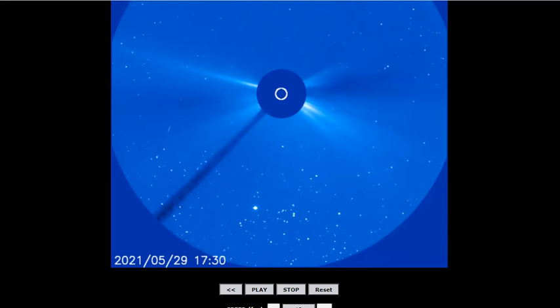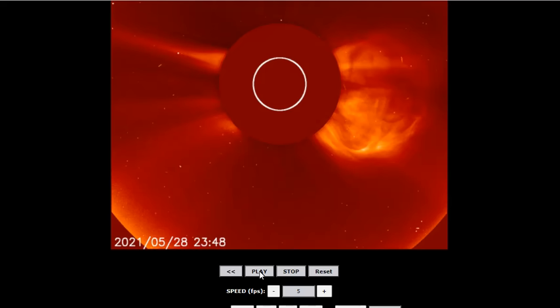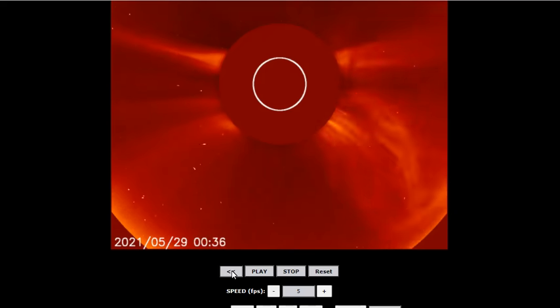And you can see that blast moving out. So that's one of the reasons why we think that there may be a low-level geomagnetic storm here. And we'll play it through.